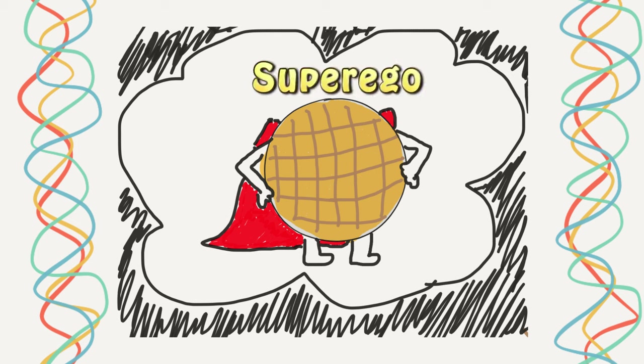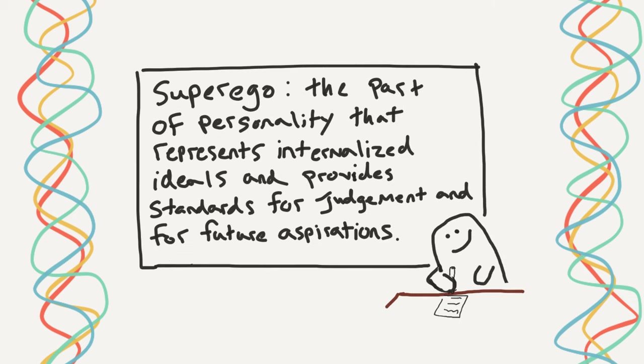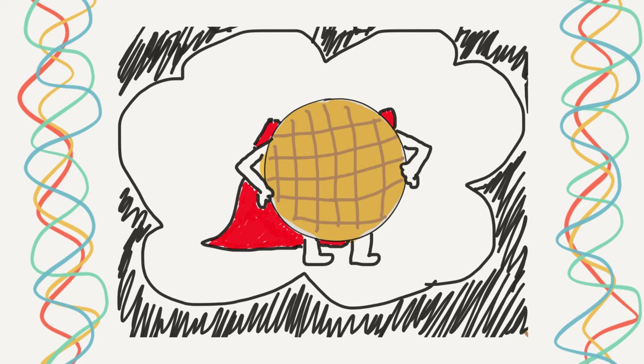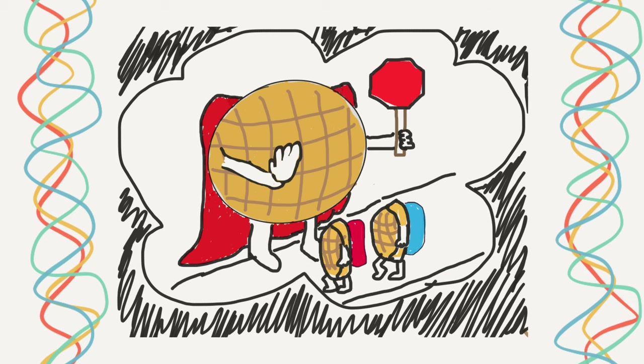Now, this is a part of the personality that, according to Freud, represents internalized ideals and provides standards for judgment, the conscience, and for future aspirations. Essentially, this is the angel on your shoulder. And it is constantly looking out to do the right thing, whispering into your ear what should be done.